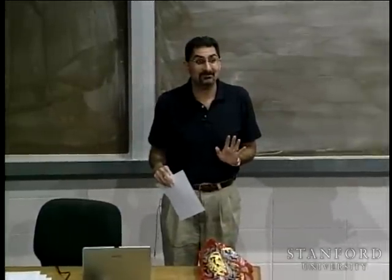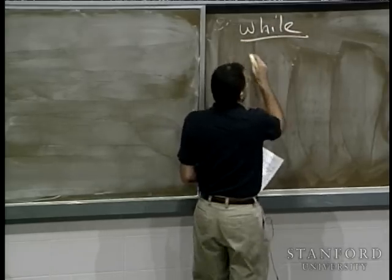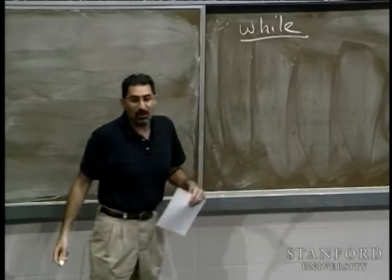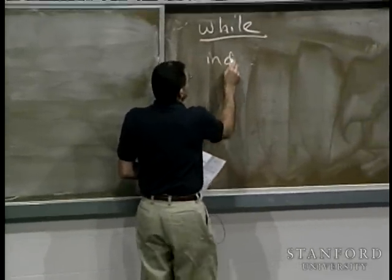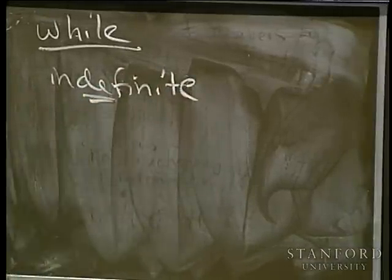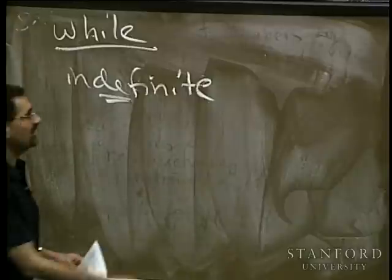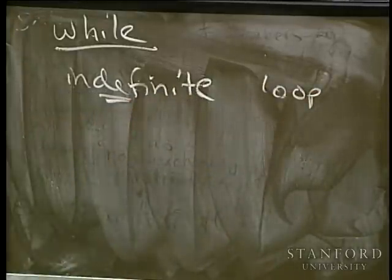Let's press ahead with something we talked about last time: the while loop. The while loop is used when you don't know how many times you're going to do something. This is what we refer to as an indefinite loop — not an infinite loop. An indefinite loop is one where, when it starts, you don't know how many times you'll iterate.